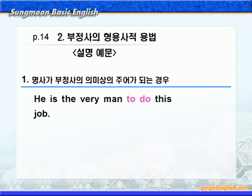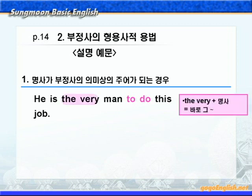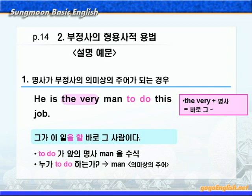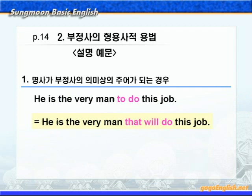'He is the very man to do this job.' 'the very + 명사'하면 바로 그 뭐뭐라는 뜻이 됩니다. 'He is the very man', 그는 바로 그 사람이다. 'to do this job', 이 일을 할 바로 그 사람이다. to do가 앞에 명사 'man'을 수식하고 있고, 'to do this job'을 하는 주체가 'man'이니까 'man'이 의미상의 주어가 됩니다. 관계대명사로 바꾸면 'He is the very man that will do this job.'